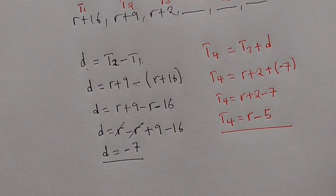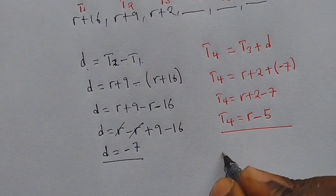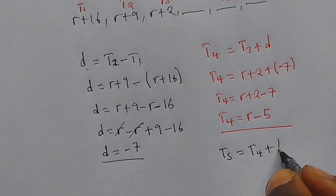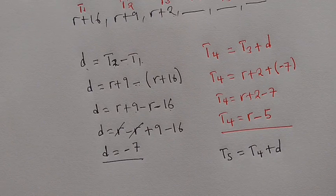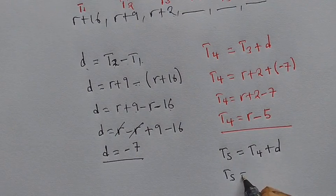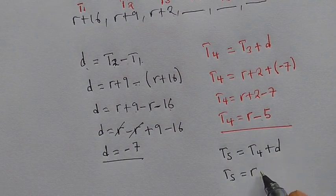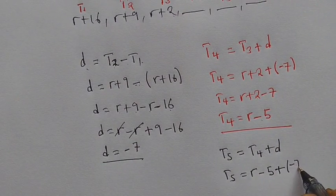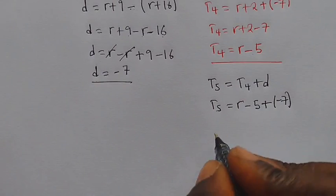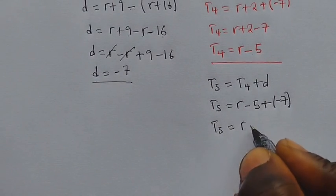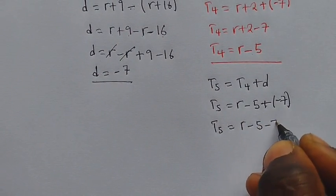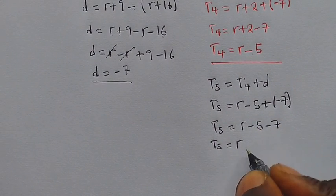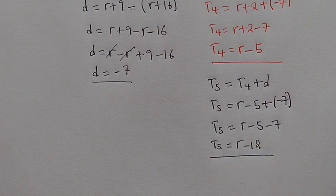To find term five, we use the same idea: term five equals term four plus D. Term four is R minus 5, and D is negative 7. So term five equals R minus 5 minus 7, which gives us R minus 12.